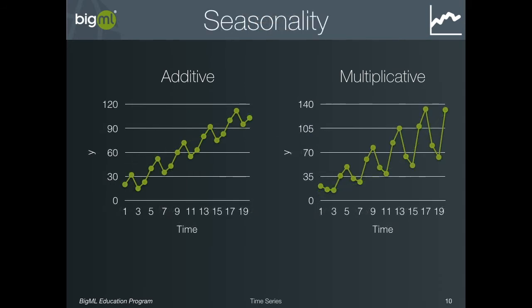The second factor is seasonality. Seasonality refers to any pattern in the data that repeats for a constant number of instances. For example, daily traffic volumes might have a repeating pattern every seven instances due to the cycle of weekdays and weekends. Monthly average temperatures have a cycle that lasts every twelve instances, corresponding to the yearly cycle of the seasons. Seasonality can also be additive or multiplicative, depending on whether the periodic variations of the data are constant or get larger as the values increase.